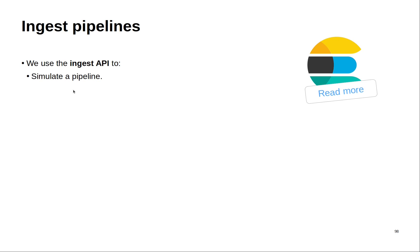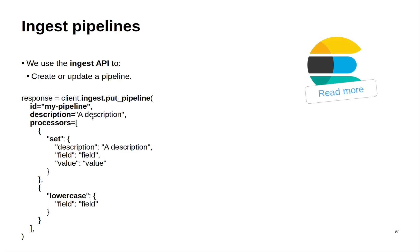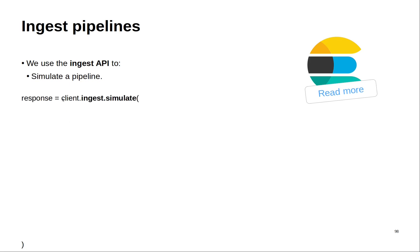We can also simulate a pipeline. This is very important because before applying your pipeline to actual data, you need to test it. You use the simulate method to do that. We provide the ID — the ID here is for the pipeline that we already created. If I want to simulate it, I will take this ID and give it to the simulate method.